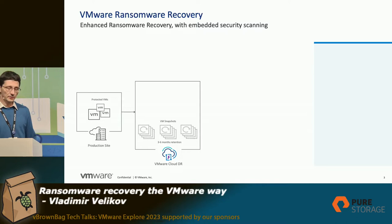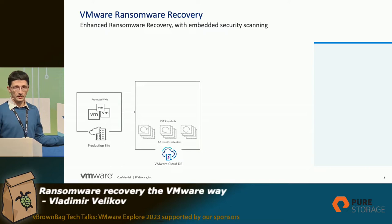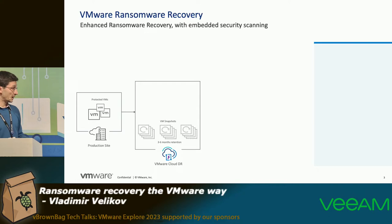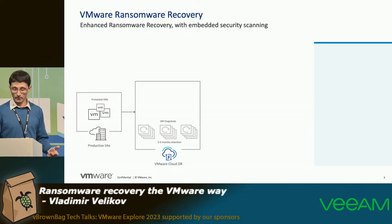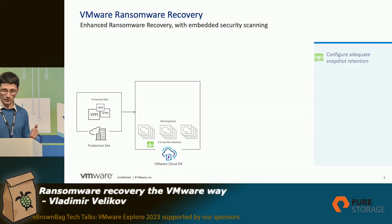Let's have a look at VMware ransomware recovery — how it's built and how it works. On the left-hand side you have the production side, let's say it's on-premises, although we support cloud as well, with your workloads. These get replicated onto the VCDR service in the cloud, so you get a bunch of snapshots there. The first step you need to take for ransomware protection is to configure a suitable retention period.